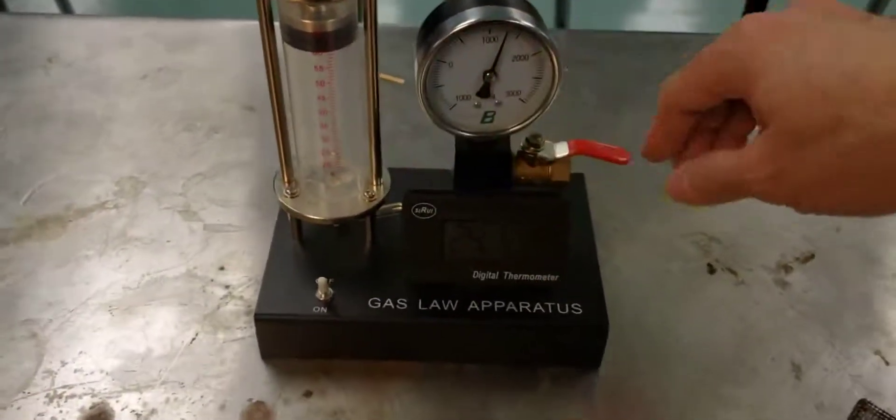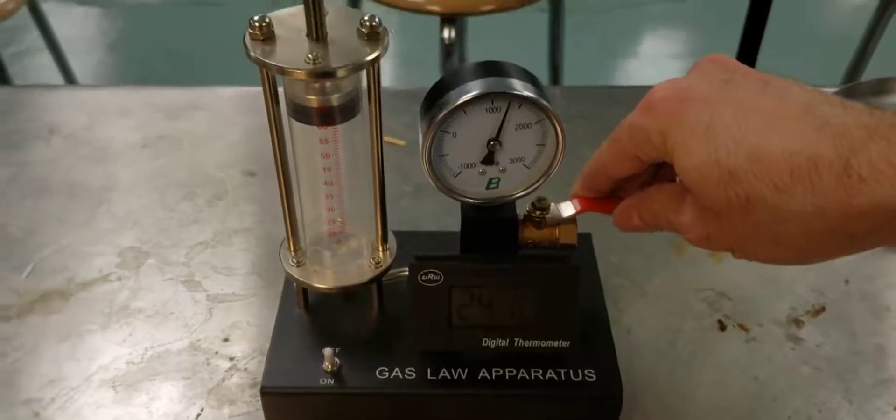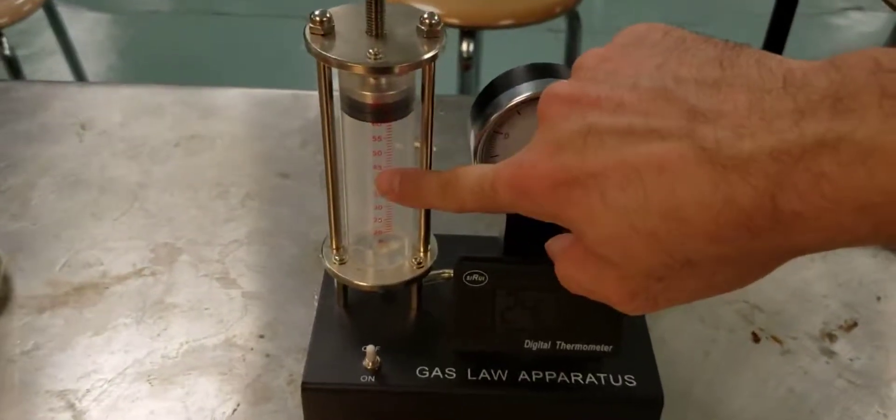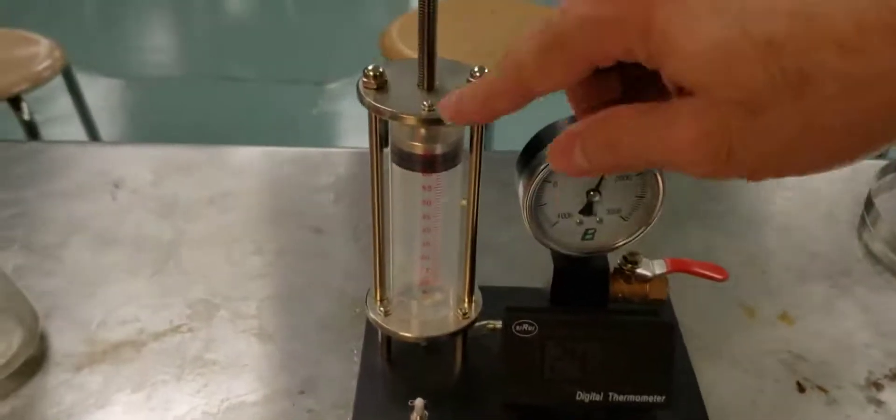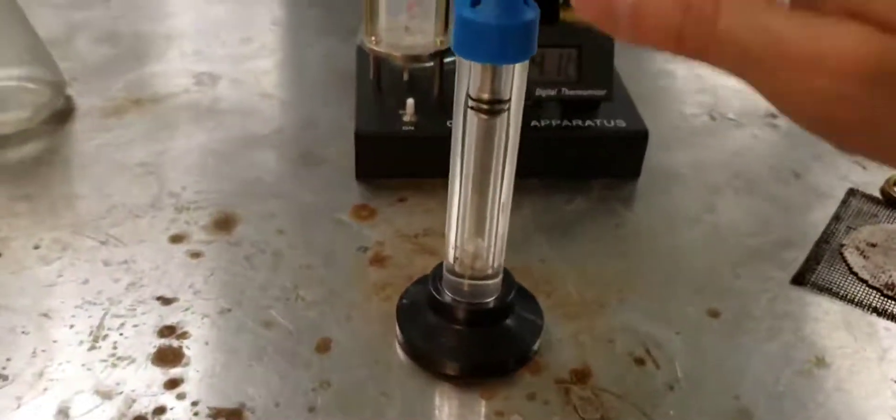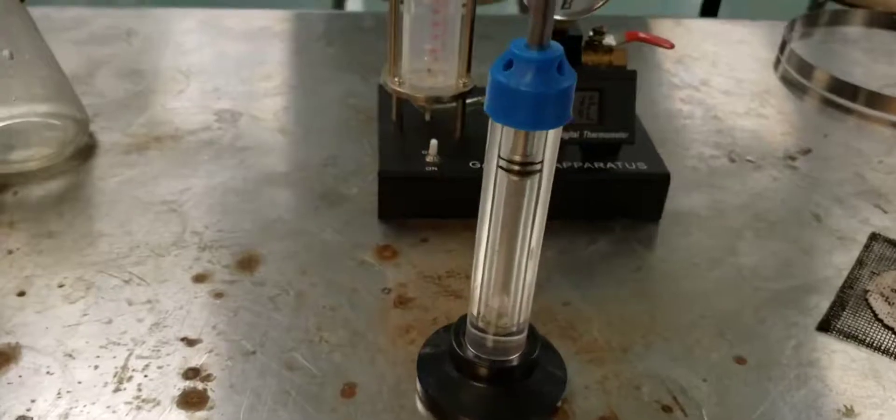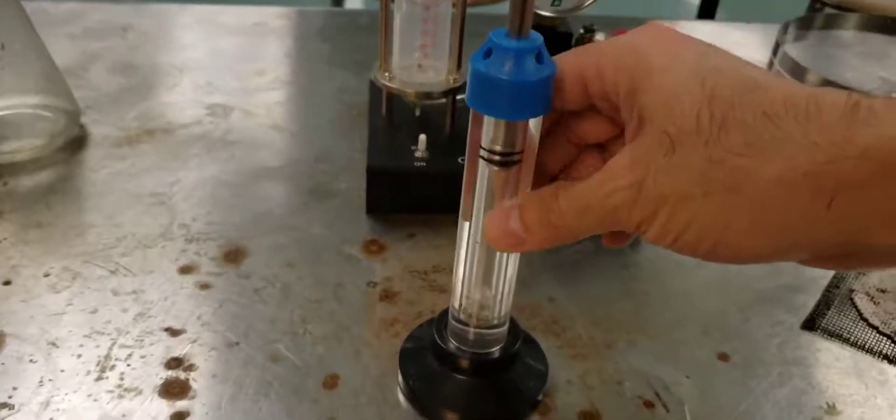But it actually has a lock so you can lock the air in there when you close this. This part that can push up and down, kind of like here, see? That's called a movable piston. This is like what's inside of a car engine.